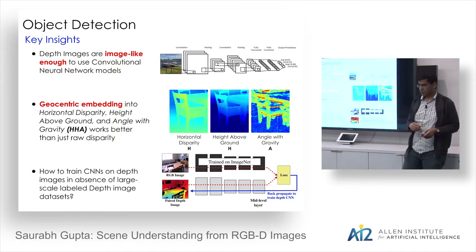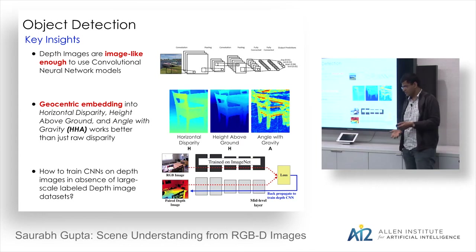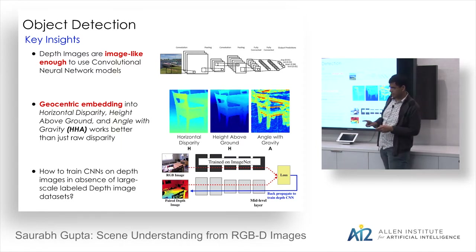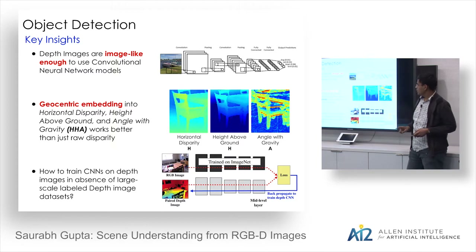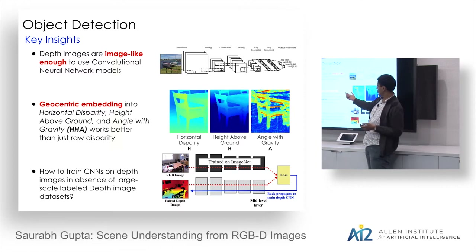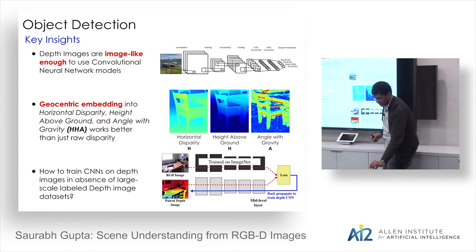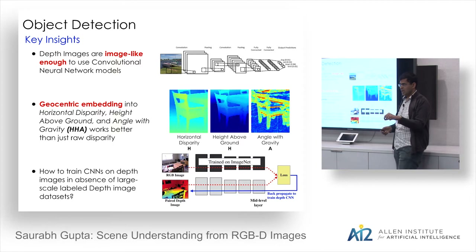Three key insights. First: depth images are image-like enough to use CNNs — counterintuitive three years ago but true. Second: just feeding the raw depth image into a CNN is not optimal. Better is the geocentric embedding, which computes not just depth but also height above ground and angle with gravity, giving each pixel global scene context. This works better than raw depth.